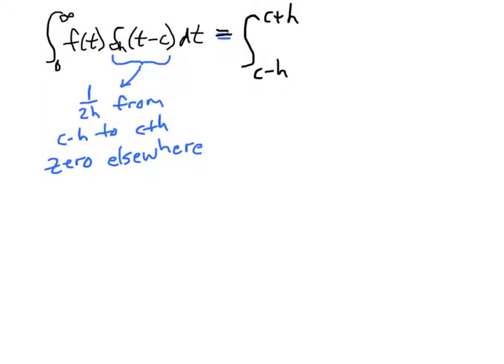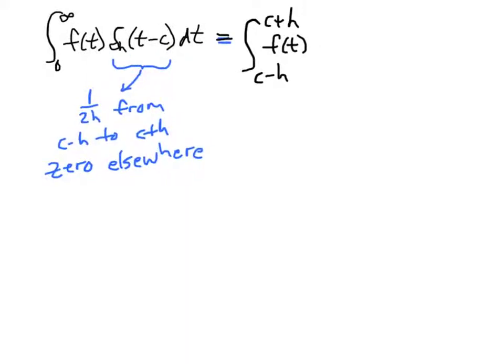We still have our function f of t, but between c minus h and c plus h, the value of the delta sub h of t minus c is simply 1 over 2h, which is of course a constant. So let's see if we can move. I'm not going to be able to do that. So let's leave it as it is. Let's put a 1 over 2h in here, dt.